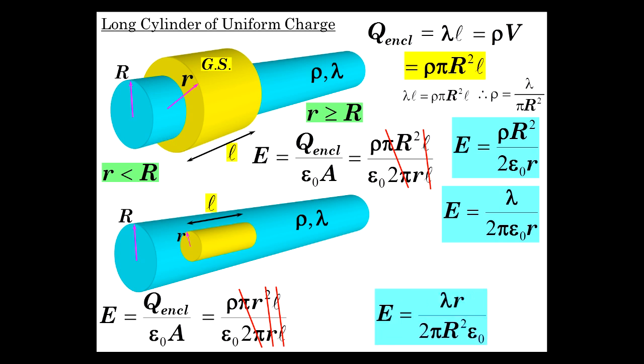Some cancellation. And the result, lambda r over 2 pi R squared epsilon 0. Notice the E field up here is inversely proportional to R. Here it's proportional to R. Big difference, obviously. And you see this lambda over pi R squared? That's rho. So we can express this as rho r over 2 epsilon 0. There it is.